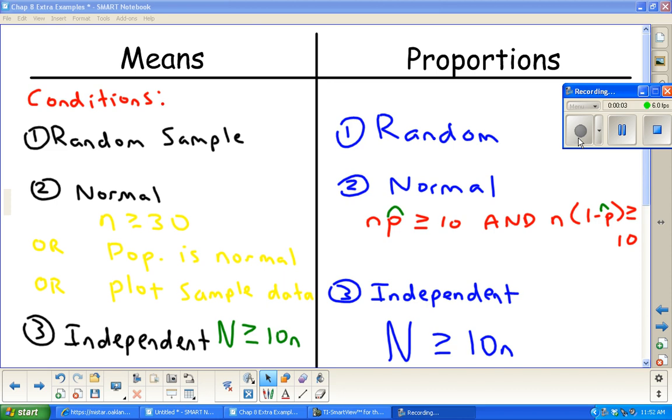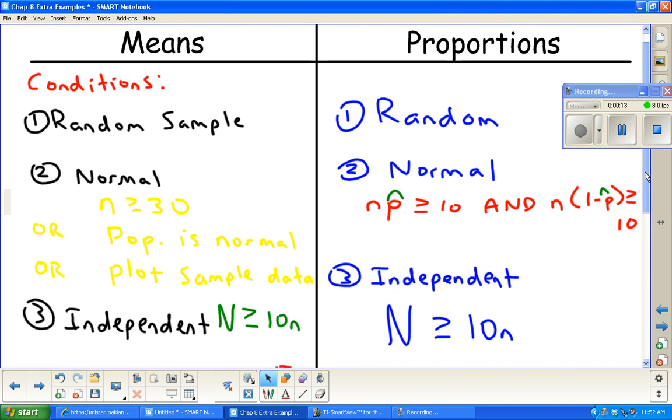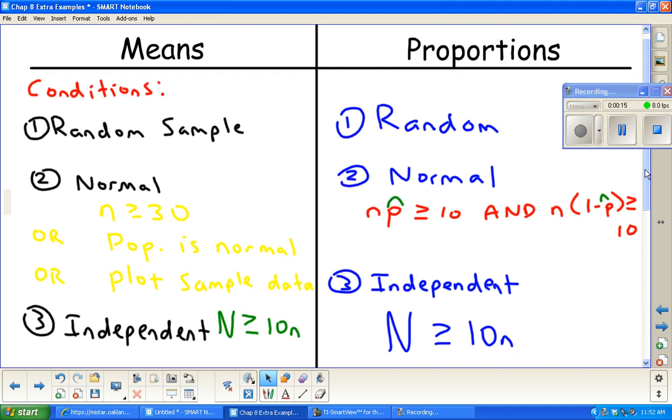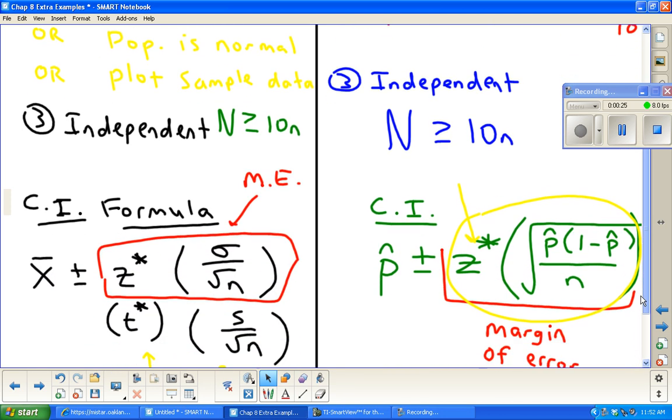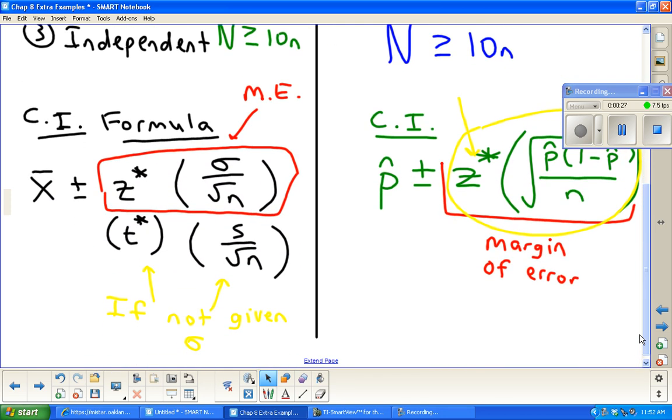Okay, here's a little extra review from Chapter 8 with the confidence intervals. I just want to remind you, go over this little thing we started in class, getting the conditions and focusing on how means are similar to proportions in some ways. The second condition and normality is different for both.